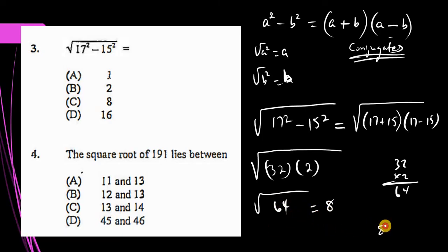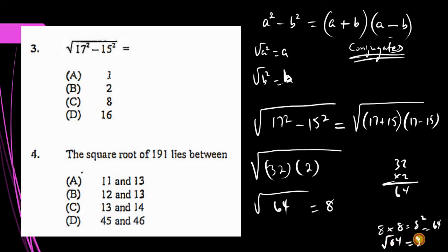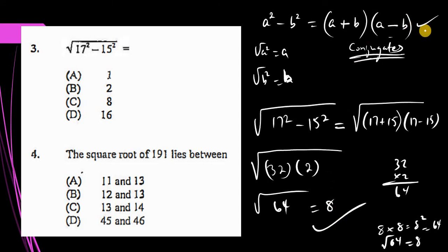The answer is 8, because 8 times 8 — which is 8 squared — is equal to 64, meaning the square root of 64 is 8. Play the video again if needed, just make sure you understand this concept of the difference of two squares.